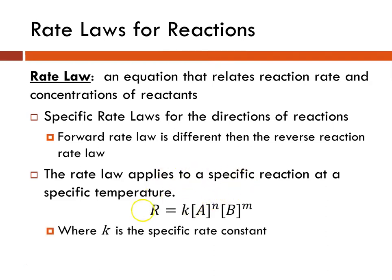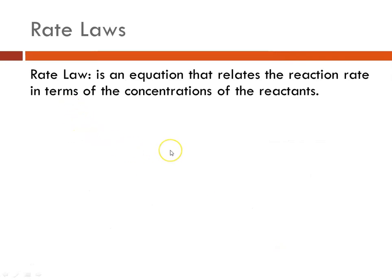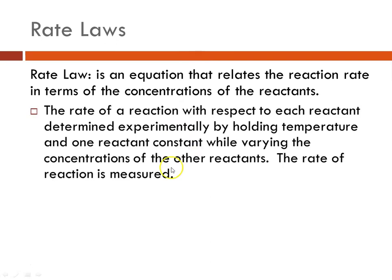So a rate law might look like this, where R is equal to K times the concentration of A raised to a power, times the concentration of B raised to a power. K is the specific rate constant, and it's really a proportionality constant.